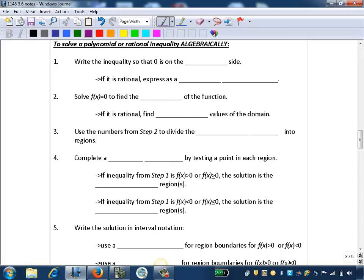Step 1: Write the inequality so that 0 is on the right side. So not only do we want to isolate 0 and get 0 on one side, we specifically want it on the right side because we read left to right. If it's a rational inequality, we want to express it as a single quotient or a single fraction.